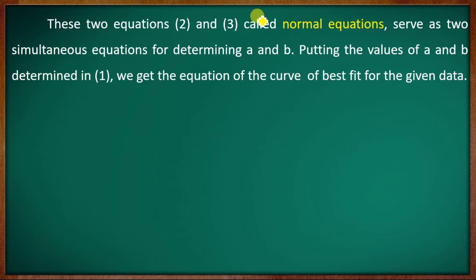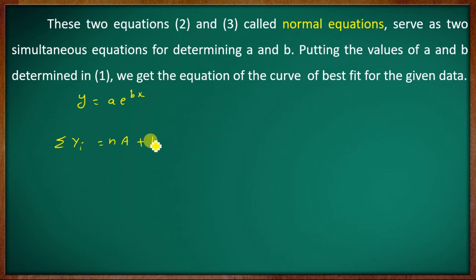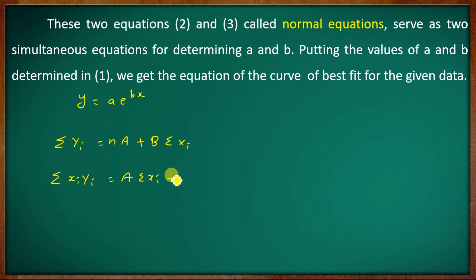These two equations are the two simultaneous normal equations to determine A and B. Putting the values of A and B back into equation 1, we get the equation of best fit for the given data: y equal to a into e raised to bx. The normal equations are: summation Yi = nA + B·summation xi, and summation xi·Yi = A·summation xi + B·summation xi squared.